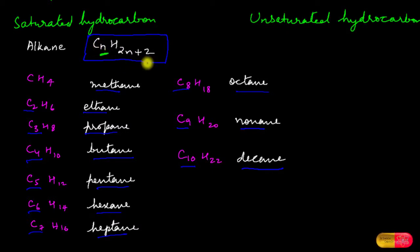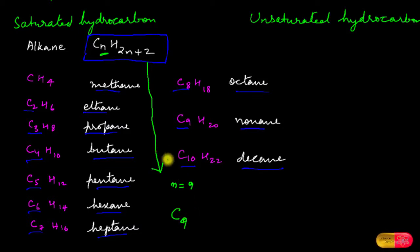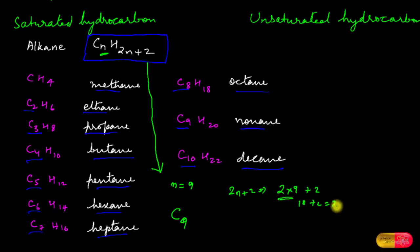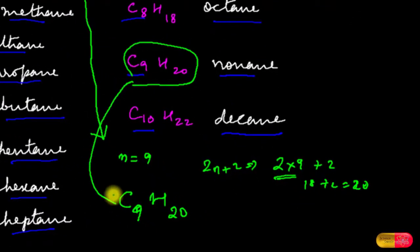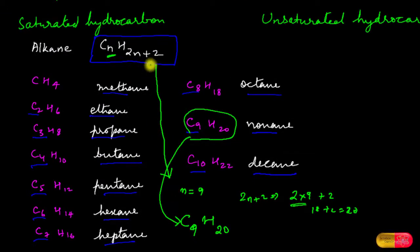Let us take a simple example: if the number of carbon atoms is 9, then n = 9. Using the general formula CₙH₂ₙ₊₂, we substitute: C₉ and H₂ₙ₊₂ = 2×9 + 2 = 18 + 2 = 20, giving us C₉H₂₀. This corresponds to nonane, confirming the formula. If you remember the general formula, it is very easy to find the molecular formula of any alkane.